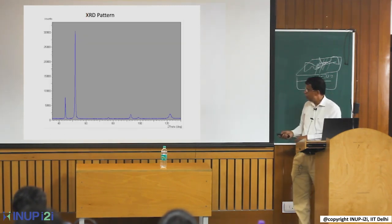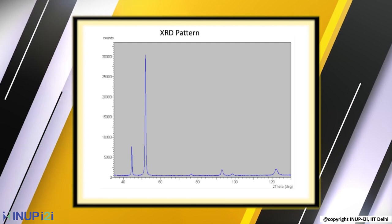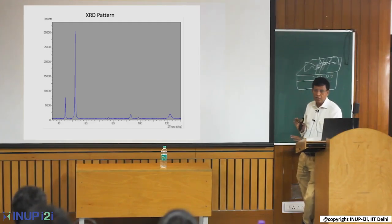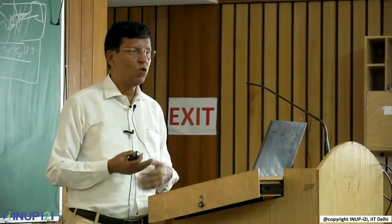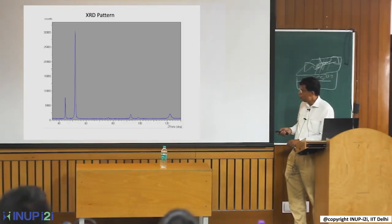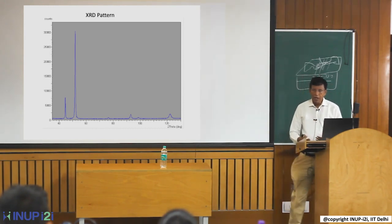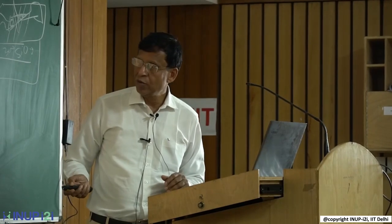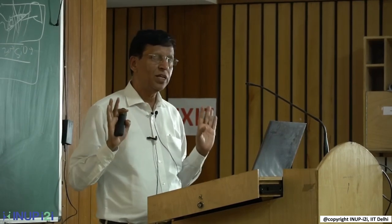Typically you get XRD peaks at different values of theta. The question is how you characterize and identify these peaks. A quick way: suppose you are making zirconium oxide and you get some peaks. You check JCPDS data, which gives the theta values where peaks should appear for zirconium oxide, then compare with your data. If there is good matching, you are sure that zirconium oxide is present.